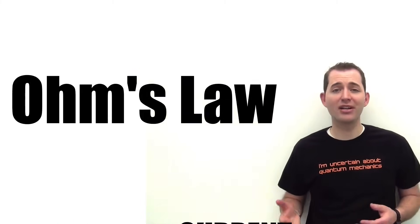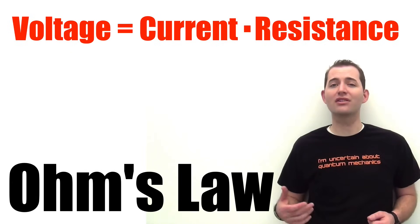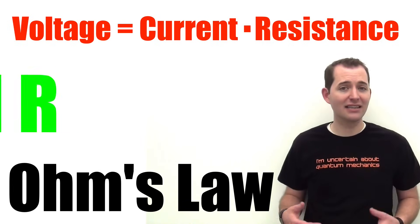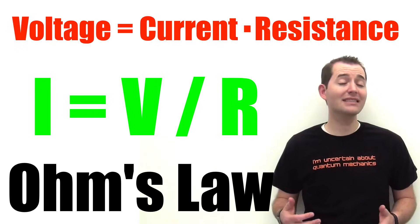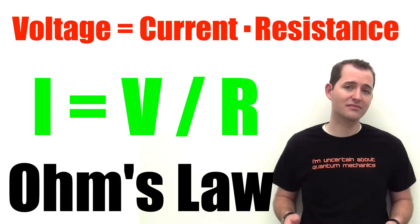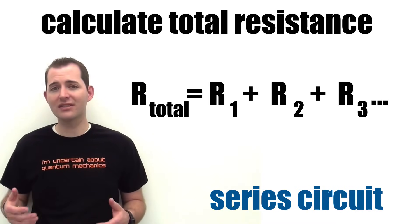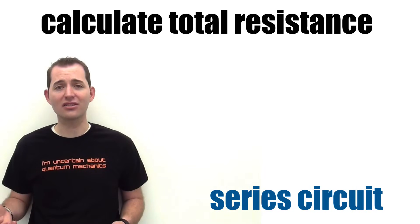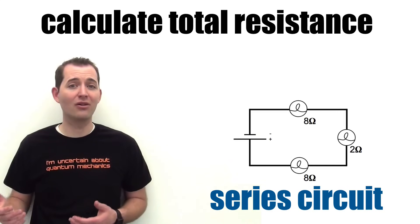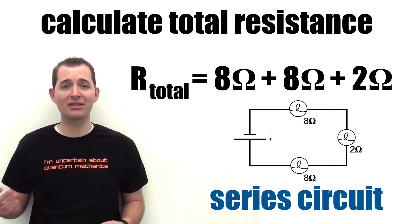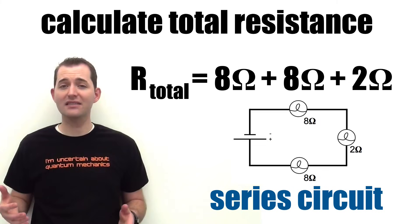We can see this relationship in Ohm's law, which states that the voltage is equal to the current times the resistance, or V equals I times R. After we isolate the I or the current in this equation, we can see that as we increase the resistance in a circuit we decrease the current. In order to determine the total resistance of a series circuit we simply add all of the resistance values to each other.